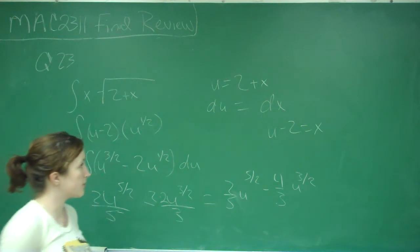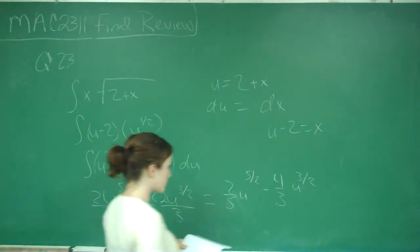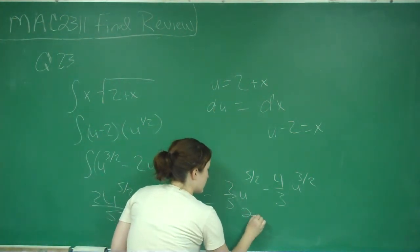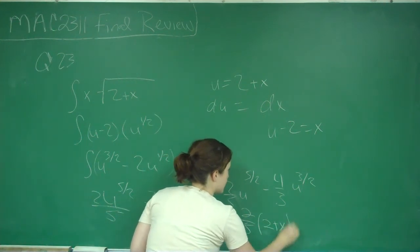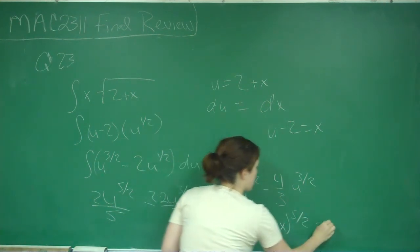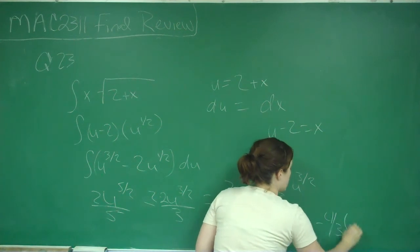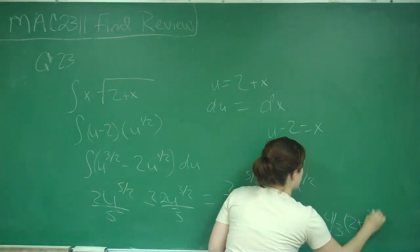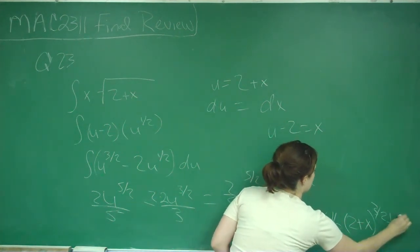Then we're going to substitute back in 2 plus x. We get 2/5 times (2 plus x) to the 5/2 minus 4/3 times (2 plus x) to the 3/2 plus C.